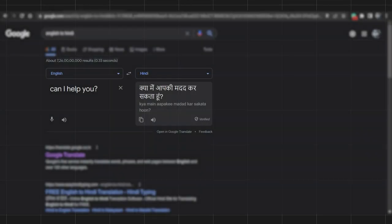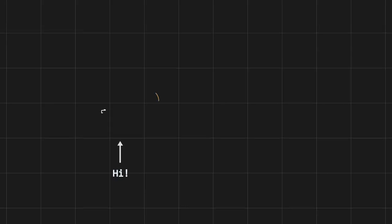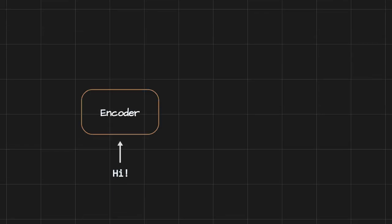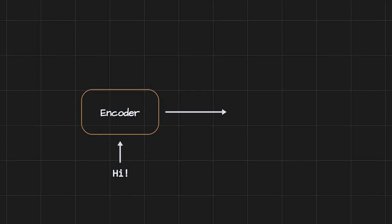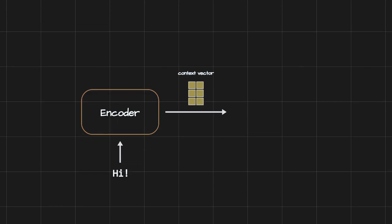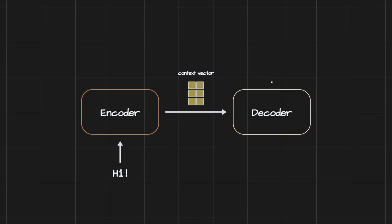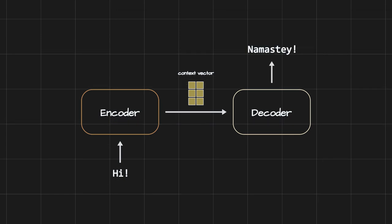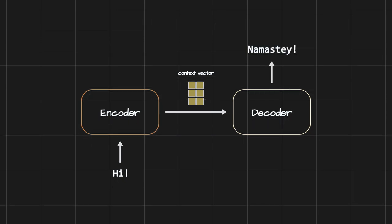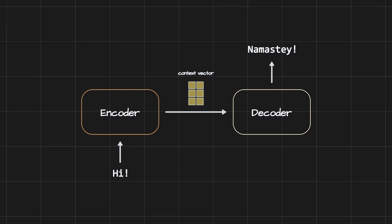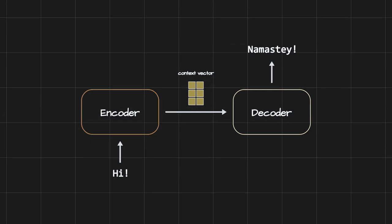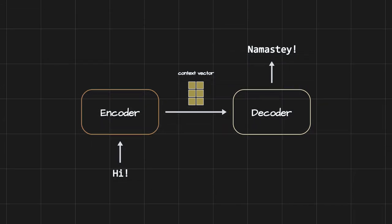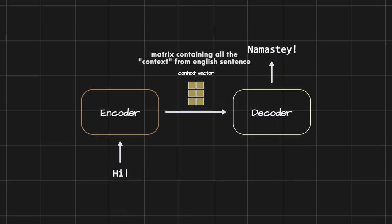Let's discuss how machine translation was done before attention. We'll use English to Hindi translation as an example. First, an input sentence in English is provided to the encoder, which encodes it into a fixed-dimensional vector known as the context vector. This context vector is then used by the decoder to decode the target phrase in Hindi. A machine translation system consists of two major components: the encoder and the decoder.